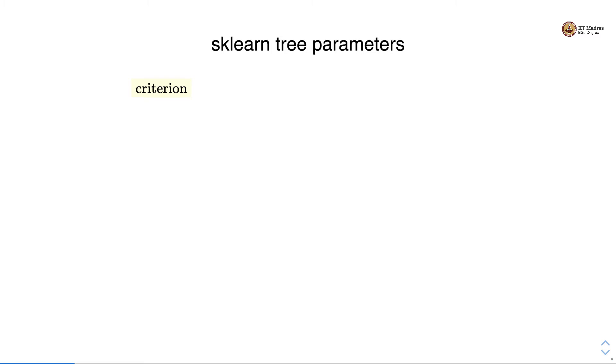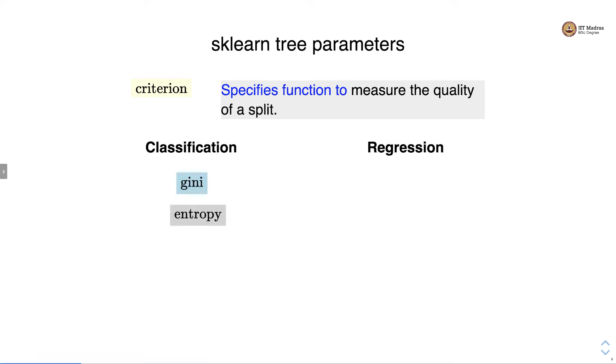Let's look at criteria which is different for classification and regression. Criteria specifies function to measure the quality of a split. In classification we use gini and entropy while for regression we have squared error, Friedman MSE, absolute error and Poisson as criteria. For classification gini is a default choice whereas for regression squared error is a default criteria.